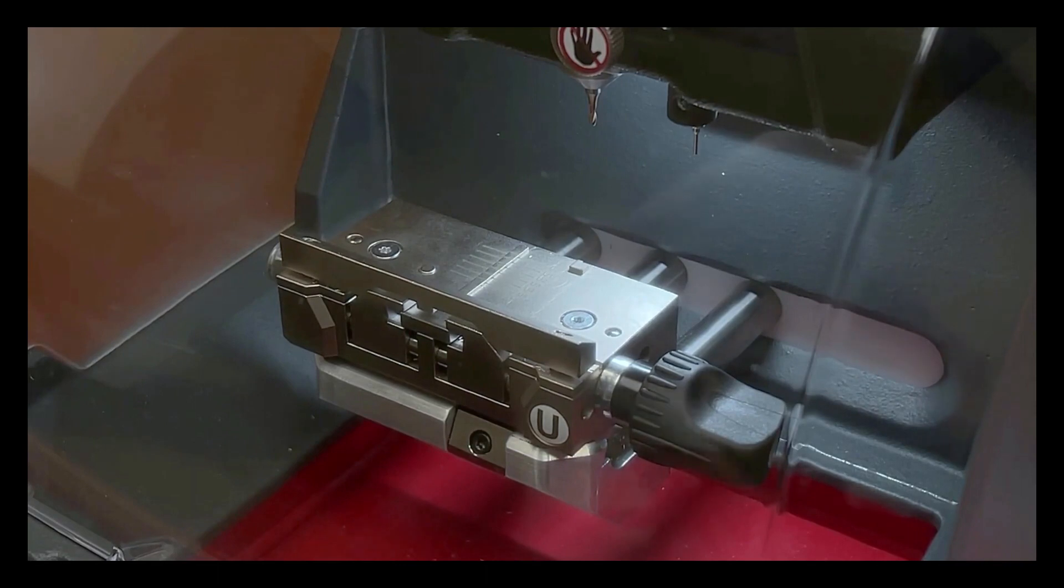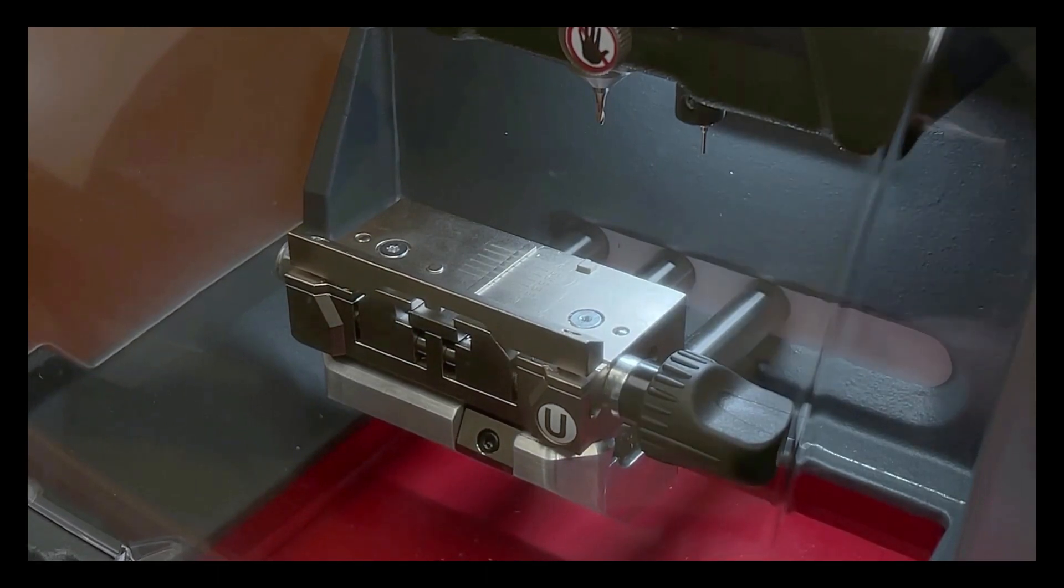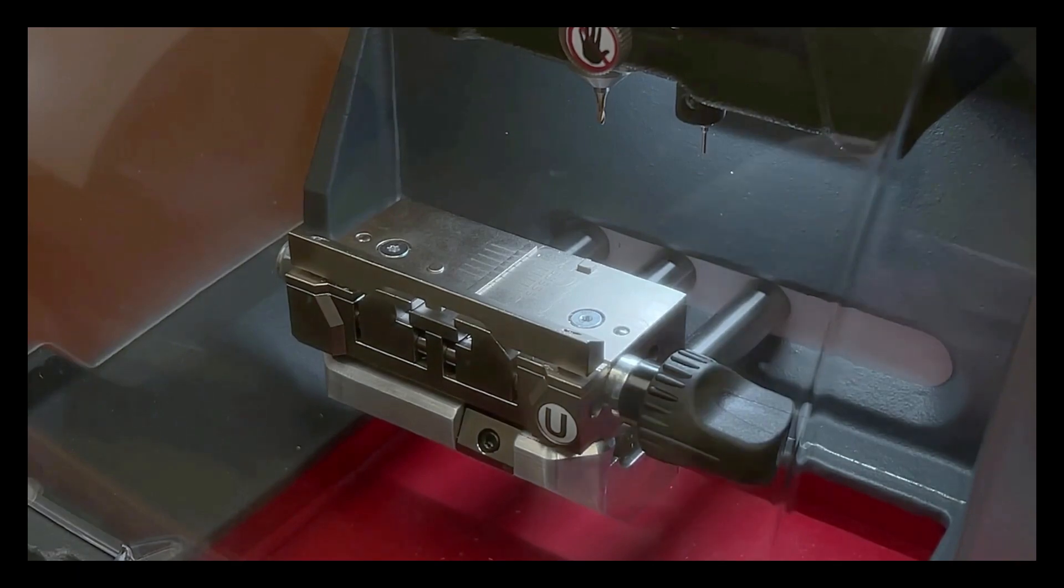To cut a Volkswagen key using the V-Jaw, inspect the customer key to make sure there's no dirt or debris inside the key and then change to the V-Jaw.